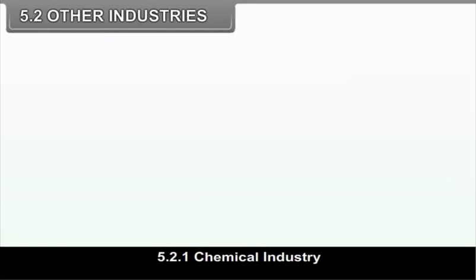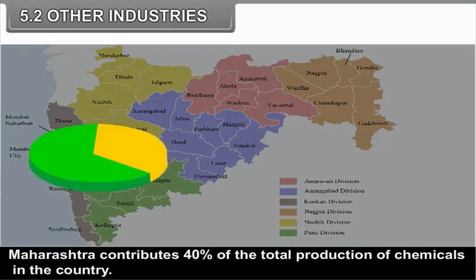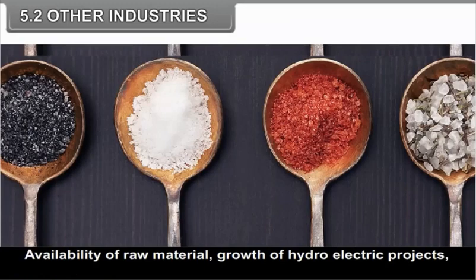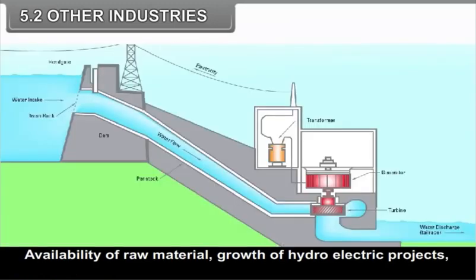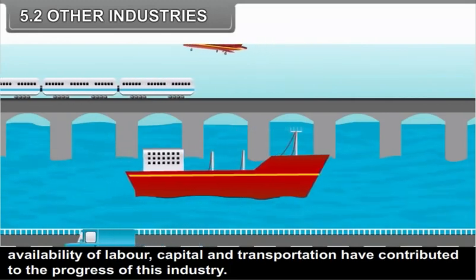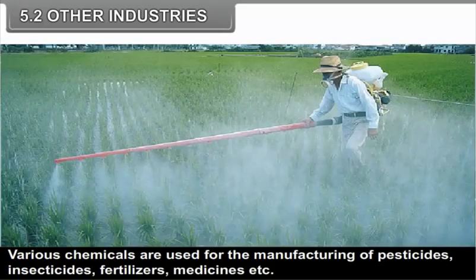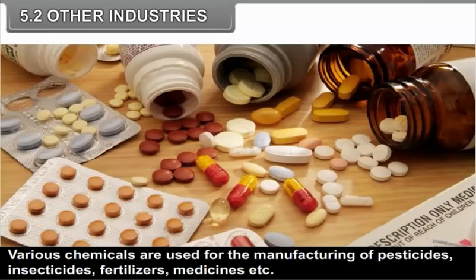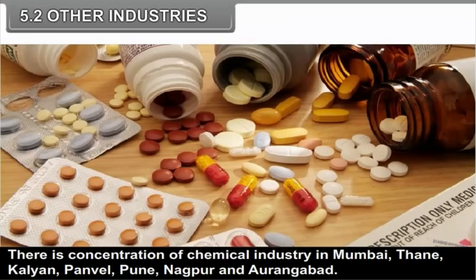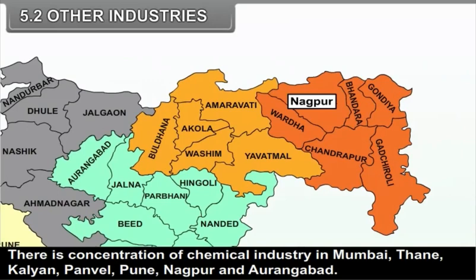Chemical Industry: This is one of the most important industries of Maharashtra. Maharashtra contributes 40% of the total production of chemicals in the country. Availability of raw material, growth of hydroelectric projects, availability of labour, capital and transportation have contributed to the progress of this industry. Various chemicals are used for the manufacturing of pesticides, insecticides, fertilizers, medicines, etc. There is a concentration of chemical industry in Mumbai, Thane, Kalyan, Panvel, Pune, Nagpur and Aurangabad.